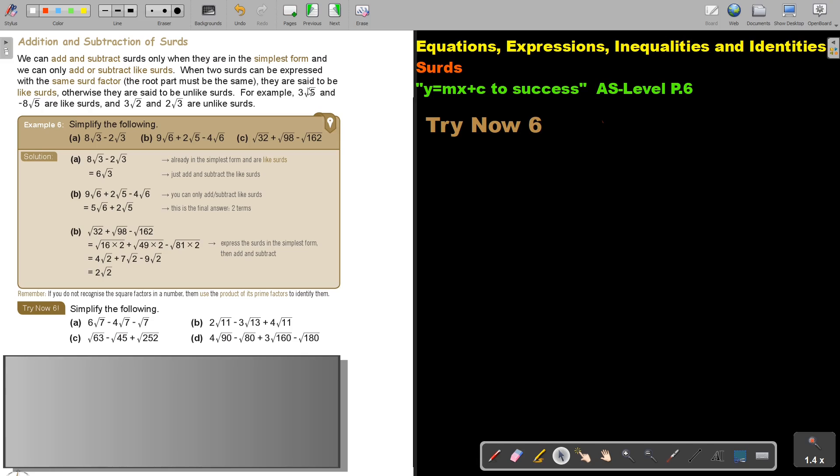For example, 3 square root 5 and negative 8 square root 5 are like surds, and 3 square root 2 and 2 square root 3 are unlike, and the reason is because that parts are different. So let's look at an example.